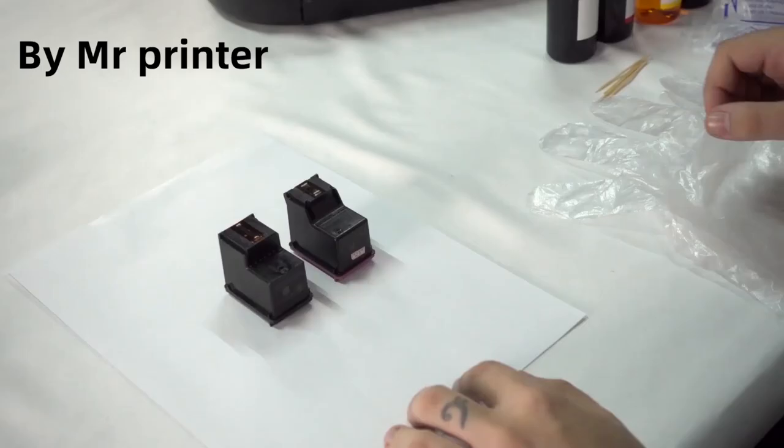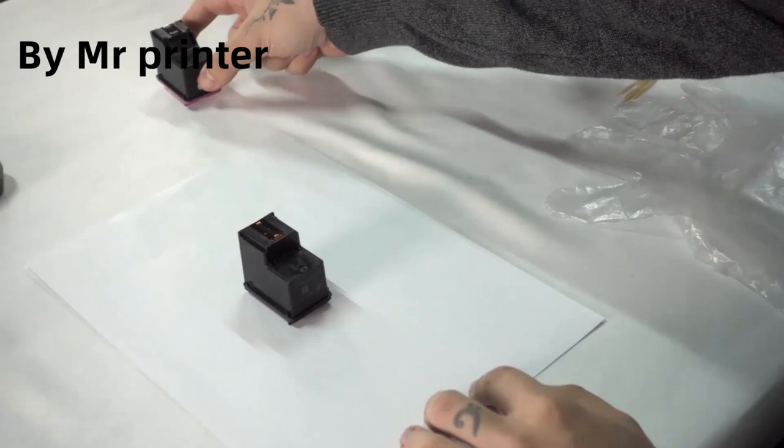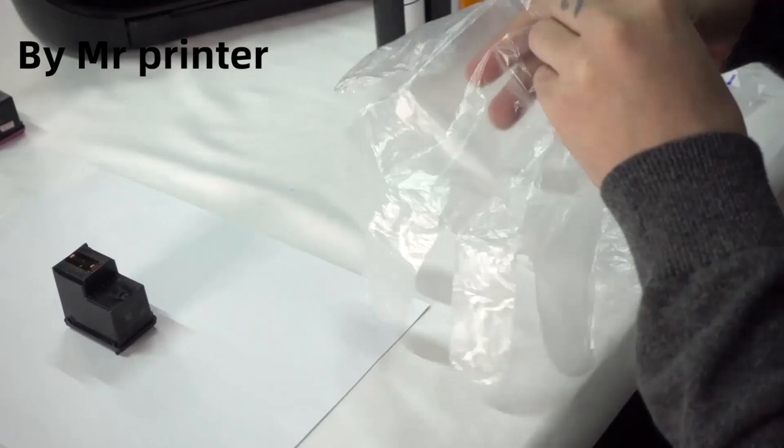Ink is really hard to remove. That's why we always use paper under the cartridge. And also, it's recommended to wear gloves as you do it, because ink is very hard to wash off your hands.